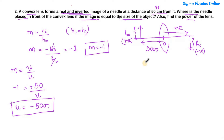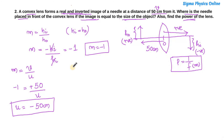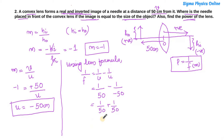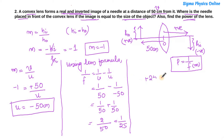To find the power, we first need the focal length using the lens formula. Using the lens formula: 1/f = 1/v minus 1/u. Here v is plus 50 and u is minus 50, so 1/f = 1/50 plus 1/50 = 2/50 = 1/25. Therefore the focal length f is plus 25 centimeters.